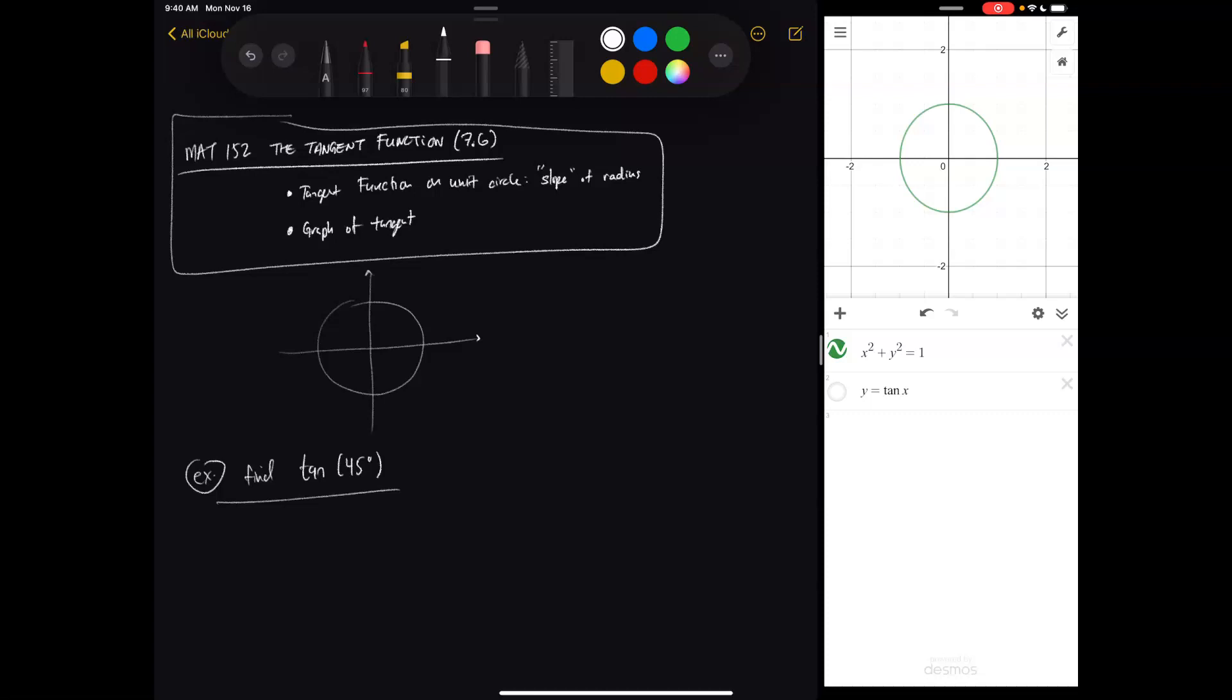Okay, so today we're looking at the tangent function in section 7.6, and there are two main ideas we're going to cover. One is looking at the tangent function and its definition and interpretation on the unit circle (remember, circle of radius 1), and then we'll look at its graph and why it is both very similar and very different to sine and cosine, the periodic functions we're used to so far.